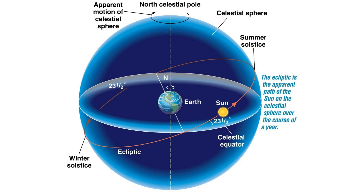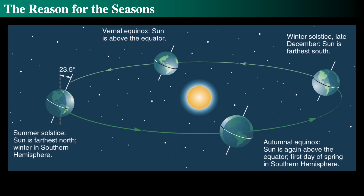Geocentrism is dead wrong. The reason for the season is the tilt of the Earth's axis with respect to its orbital plane. The altitude of a celestial object is its height measured at an angle above the horizon, and the sun has a higher altitude in the summer than in the winter in the northern hemisphere. The sun reaches its northernmost point around June 21st — the summer solstice — and its southernmost point around December 21st — the winter solstice.